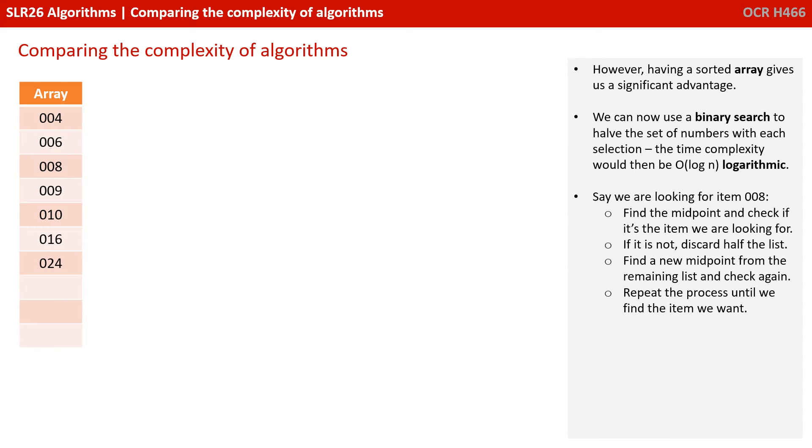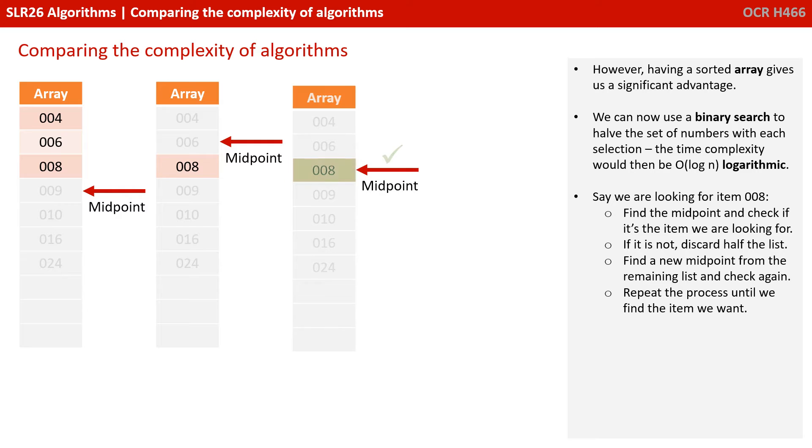However, having a sorted array gives us a significant advantage. We could now use a binary search to half the set of numbers with each selection. The time complexity then would be O(log n), logarithmic, for finding the item. Say we're looking for item 008. We find the midpoint and check if it's the item we're looking for. If it's not, we discard half the list. We find a new midpoint from the remaining list and check again. We repeat the process until we find the item we want.